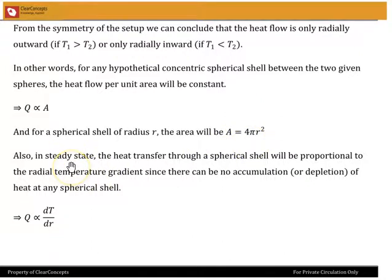Also, in our steady state condition, the heat transfer through the spherical shell will be proportional to the temperature gradient, the radial temperature gradient there, because there can be no accumulation or depletion of heat in that spherical shell. And so, Q will be directly proportional to dT by dR. That dT by dR is the radial temperature gradient.